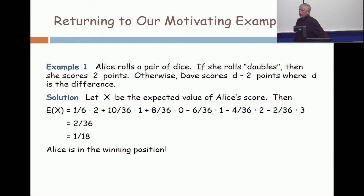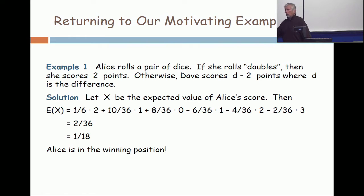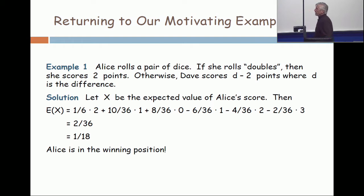For a difference of two — that is, one and three, two and four, three and five, four and six — the probability is eight over thirty-six. Eight over thirty-six of the time, it'll be a wash; nobody wins anything.